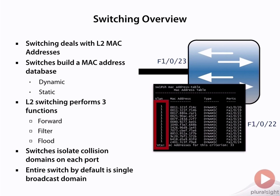The reason that the entire switch is a single broadcast domain by default is because of the way the switch is configured by default. In the MAC address table output, you can see on the left-hand column that VLAN 1 is assigned for all of these ports. By default, all of the interfaces on a Cisco switch are in the same VLAN, which means they're all in the same broadcast domain. This is something that we can change, but for right now it's important to understand that the entire switch, by default, is a single broadcast domain.